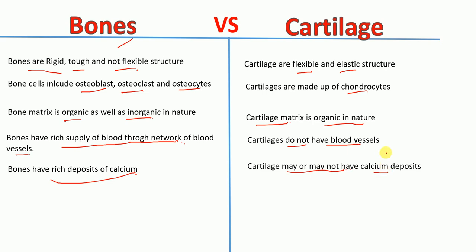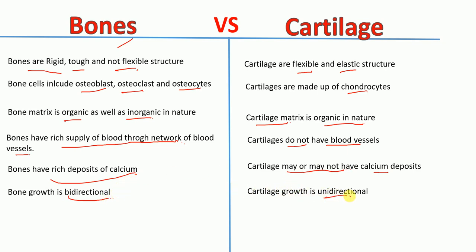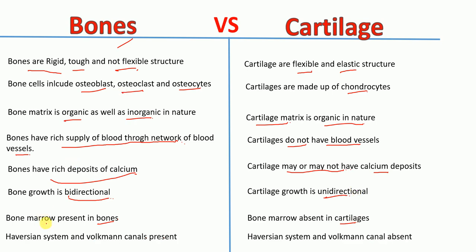Bones grow bi-directionally, from both directions, whereas cartilage growth is uni-directional — they grow from only one direction. Bone marrow is present in bones, whereas bone marrow is absent in cartilage.